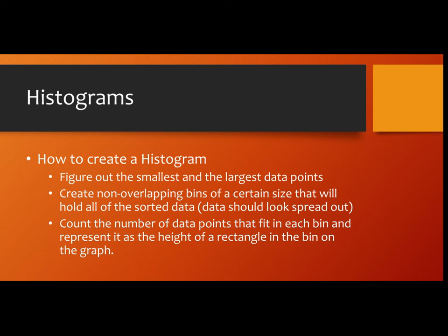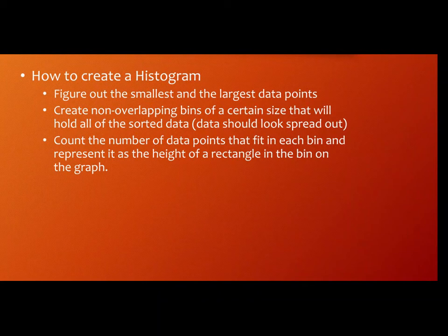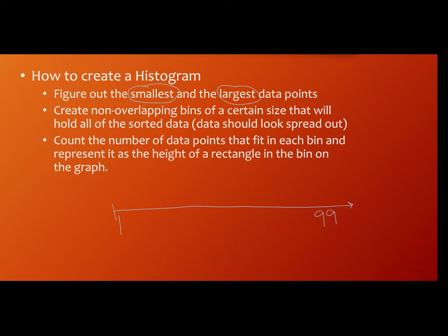We need to learn how to make our own histograms. What you start with is just a pile of data — you have data points, and your job is to create something meaningful from that. For histograms, you need to figure out what is the smallest and the largest data point. You could have a small data point like one and a large data point like 99. Your job is to create bins along the axis that don't overlap, but that capture all data between one and 99. In the last example, they had bins that were size five.